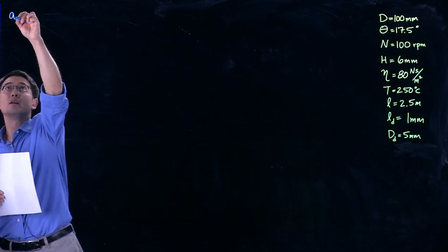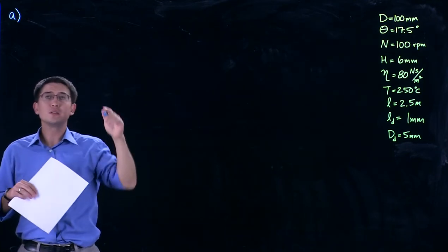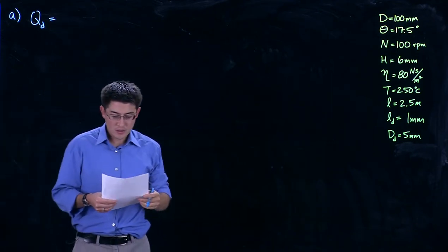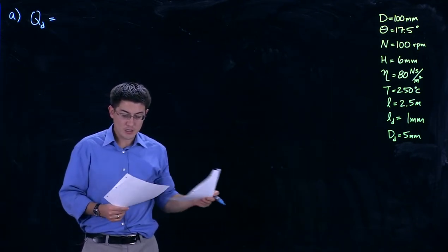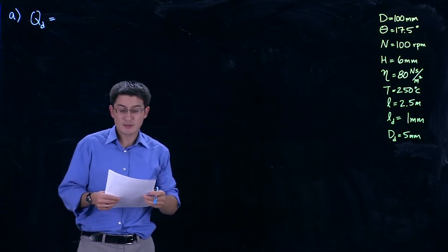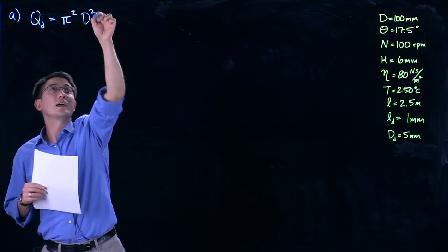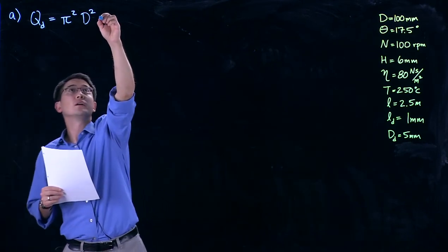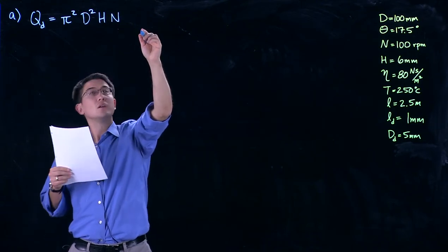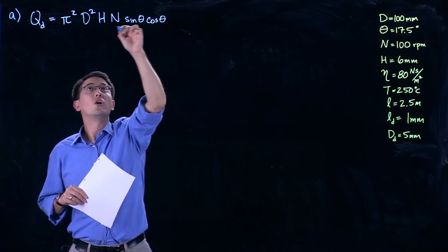For the first part, we had said what's the maximum achievable flow rate. This will be when there is no die on the end of that. So this is simply the drag flow. We know from equation 1020 that this comes out to pi squared times the diameter of the barrel squared times h times n times sine theta cosine theta, all over 2.